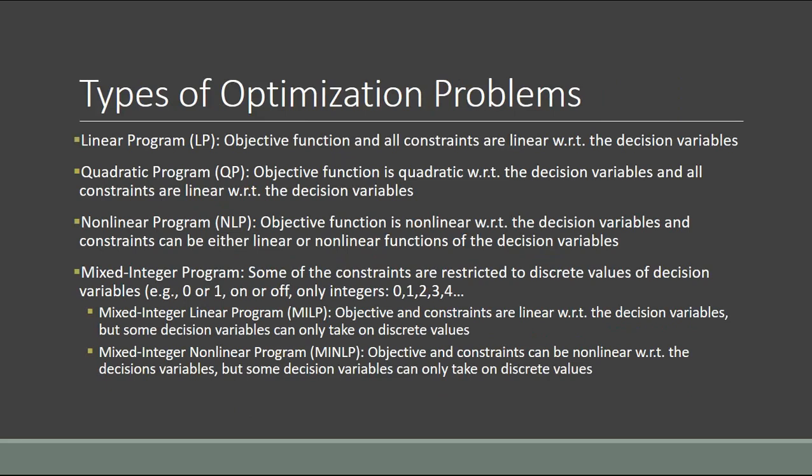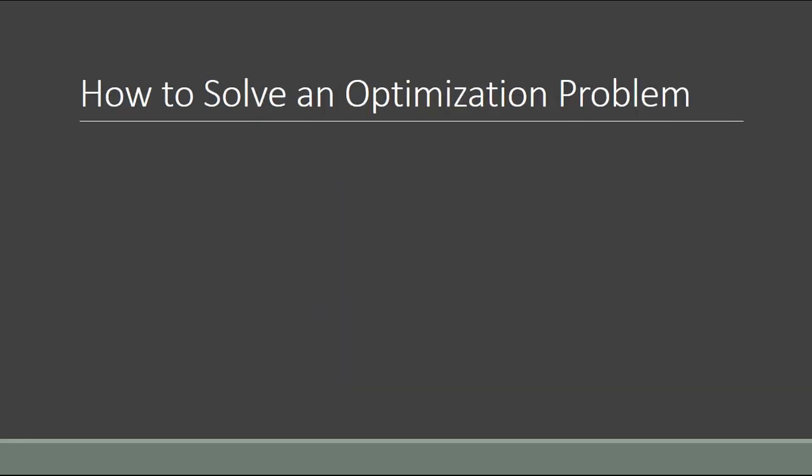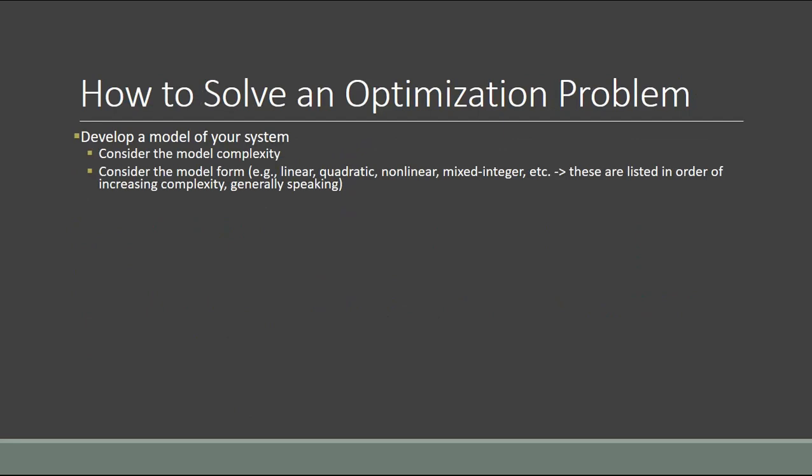To solve an optimization problem, you first need to develop a model of the system and consider what form to get it in. If you want an easier optimization problem, work with a linear or quadratic model; if those aren't accurate enough, go to a nonlinear model. If decision variables can only take discrete values, you'll need mixed integer forms. These are listed in order of increasing complexity: linear, quadratic, nonlinear, and then mixed integer as the most complex.